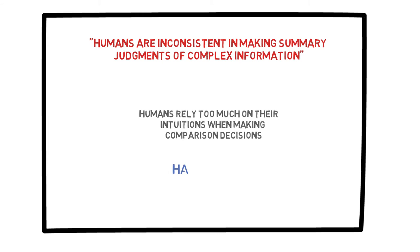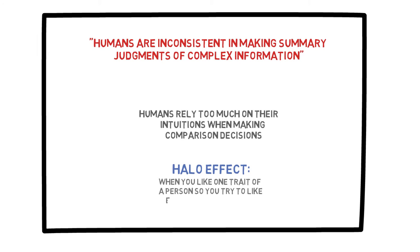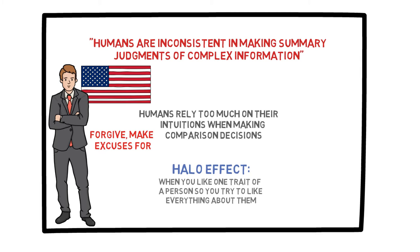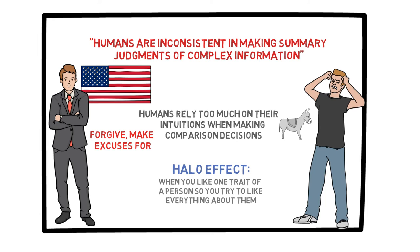An important flaw in our thinking is the halo effect, which is when you like one trait of a person or thing and so you try to like everything about them, which often leads to false judgments. For example, if you like a politician, you are more likely to forgive them or give them the benefit of the doubt if they make a mistake. It works the other way too — if I am a Democrat and a Republican candidate makes a mistake, I am much more likely to be harsh on that person and criticize them.